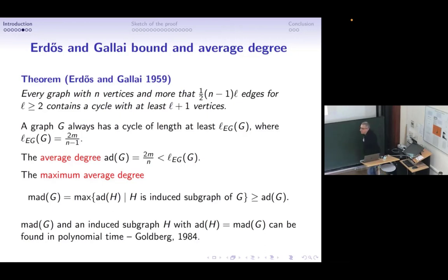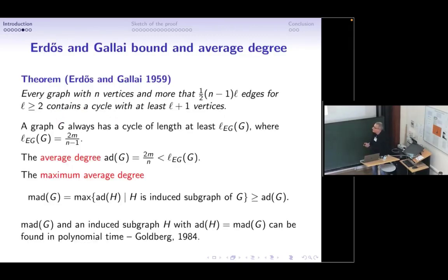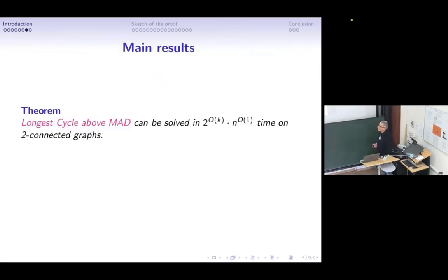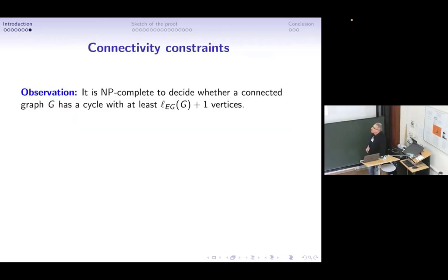Combining these observations, any two-connected graph has a cycle whose length is at least its maximum average degree. We can state the problem above this bound. Our main result is that longest cycle above maximum average degree can be solved in 2^{O(K)} · poly(n) on two-connected graphs. The same result holds for longest path — we just add a universal vertex to reduce the cycle problem to the path problem.